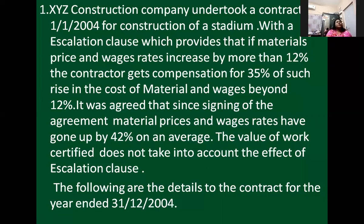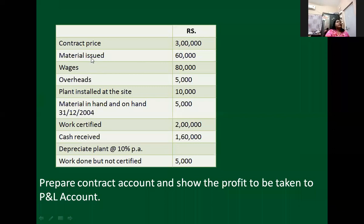Let me check out the solution — preparation of the contract account. The additional information in this problem: contract price is 3 lakhs. Expenses: materials, wages, overheads. Value of plant installed for the contract is 10,000. Material on hand after the contract — closing value to be credited — is 5,000. Work certified is 2 lakhs. Cash received is 1 lakh. Depreciation is 10%. Work uncertified — work done but not certified — is 5,000. The question is: prepare a contract account and show the profit to be taken to the P&L account.